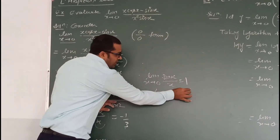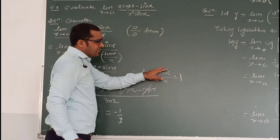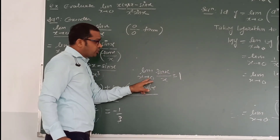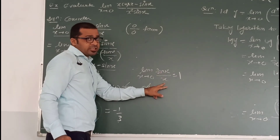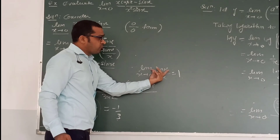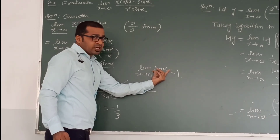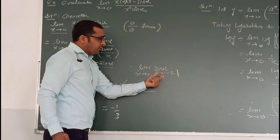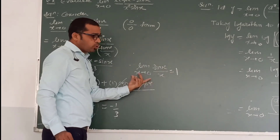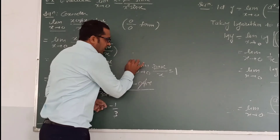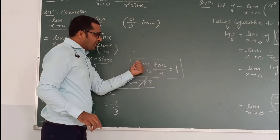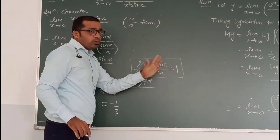The standard limit: as x tends to 0, sinx/x equals 1. We can verify this by L'Hospital's rule — if we put 0, sin0 is 0 and x is 0, giving 0/0 form. Differentiating: derivative of sinx is cosx and derivative of x is 1, then cos0 equals 1. Remember this identity: limit x→0 of sinx/x is 1, and also limit x→0 of tanx/x is 1.